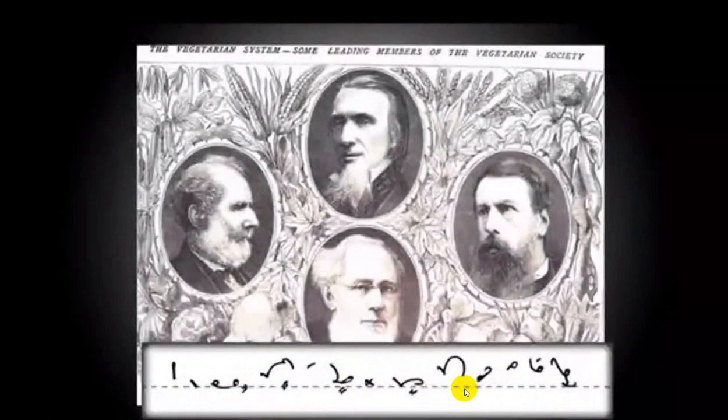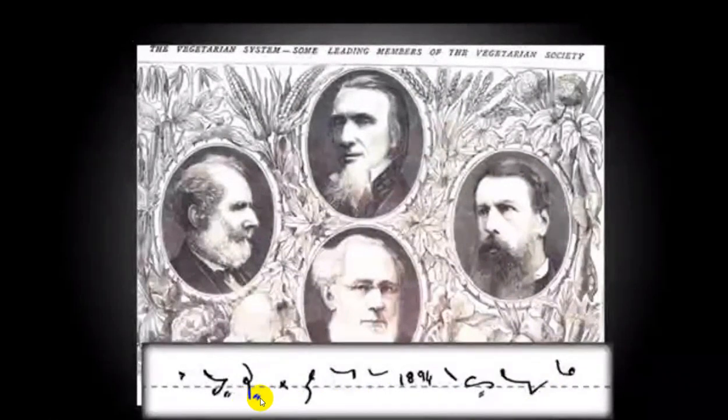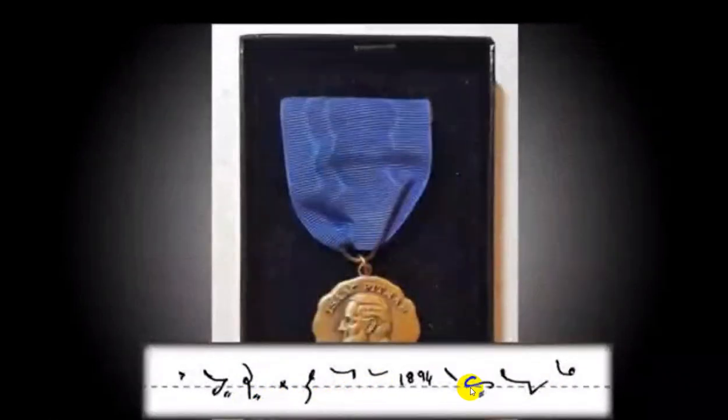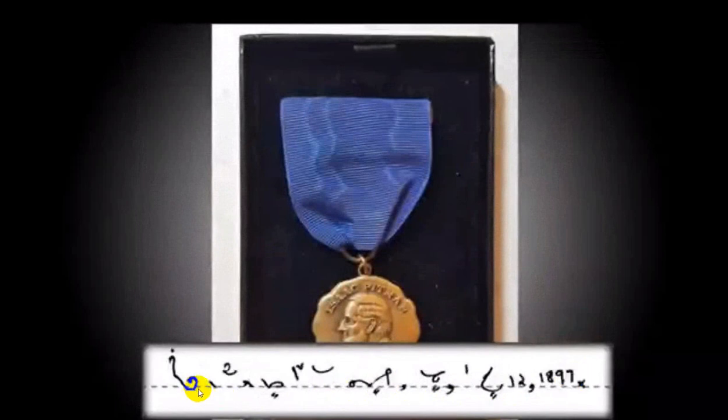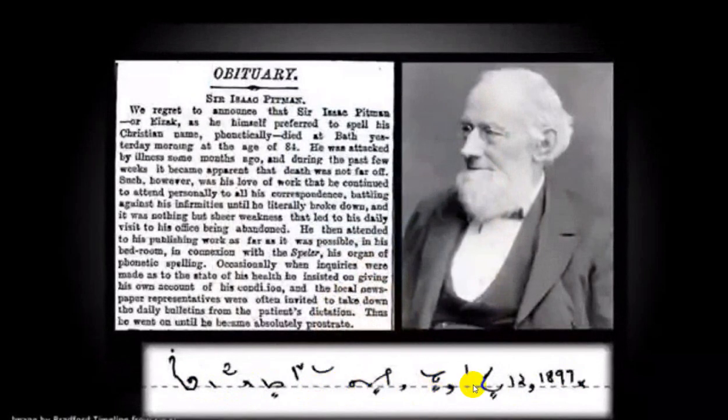Pitman also served as the vice president of the Vegetarian Society. He was knighted in 1894 by Queen Victoria for his contributions to shorthand. Pitman died in Somerset, England, on January 12, 1897.